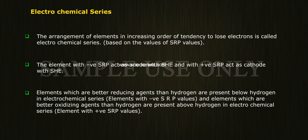Elements which are better reducing agents than hydrogen — those with more negative SRP values — are present below hydrogen in the electrochemical series. Elements which are better oxidizing agents than hydrogen are present above hydrogen in the electrochemical series.